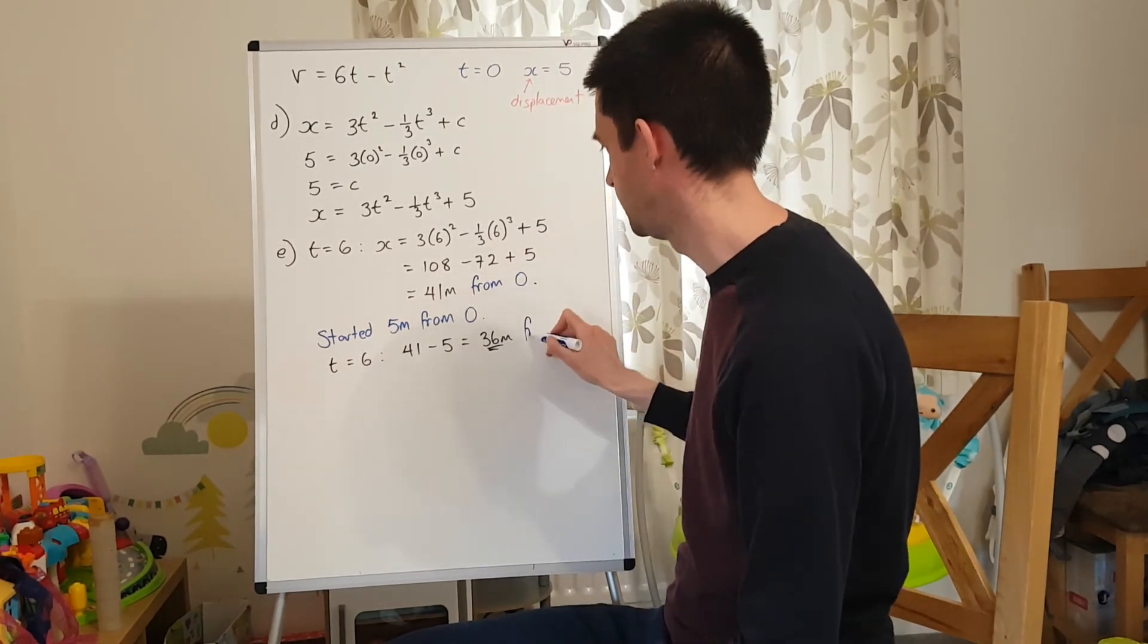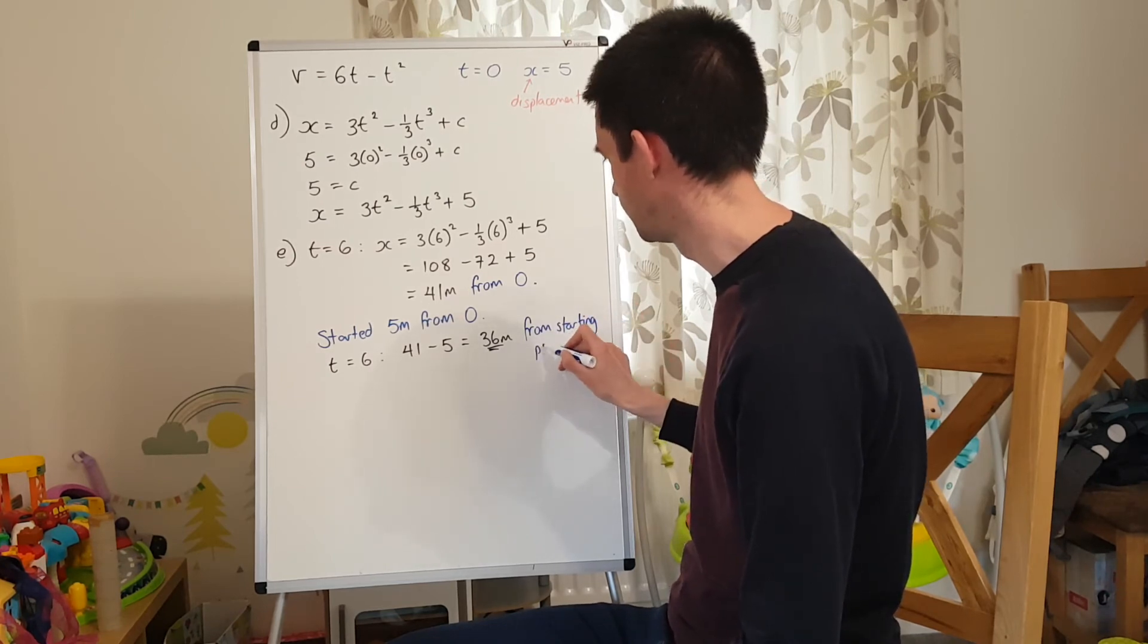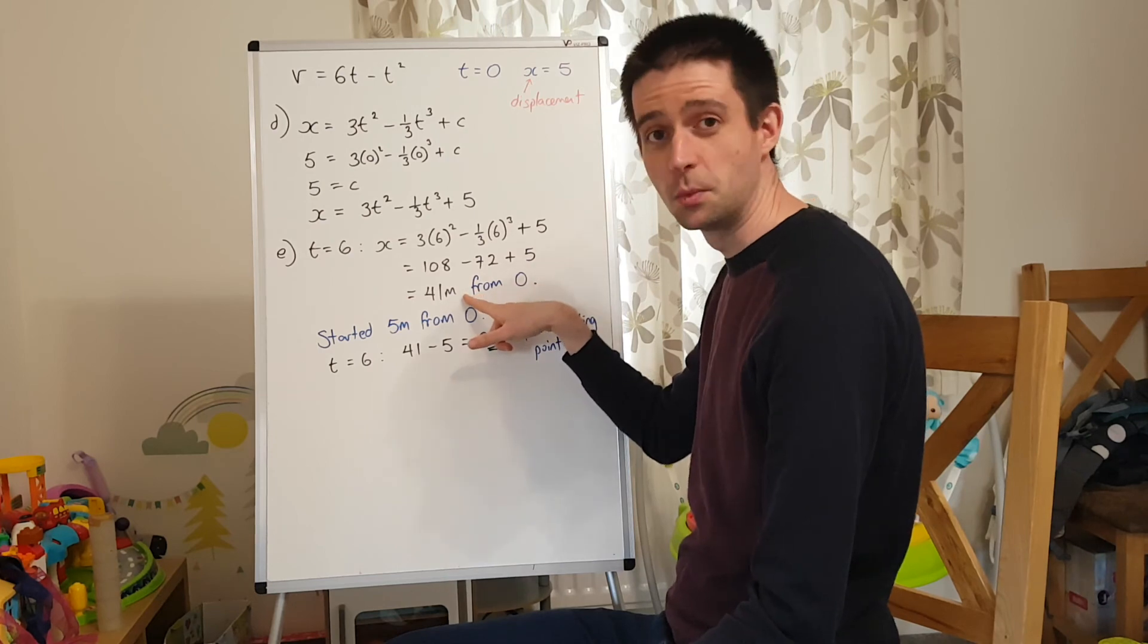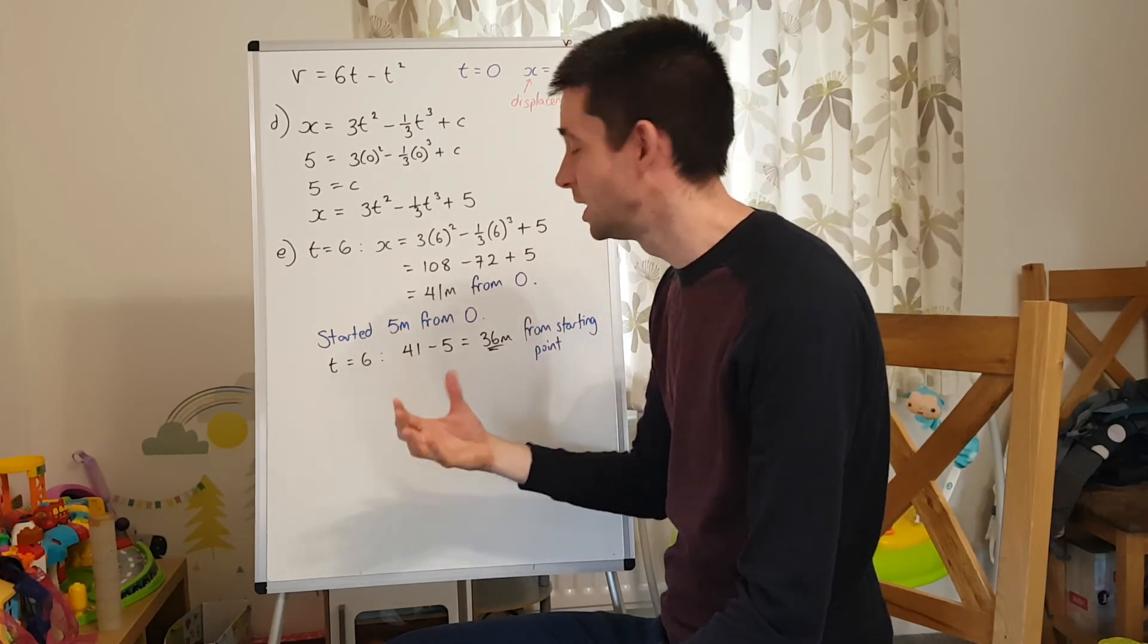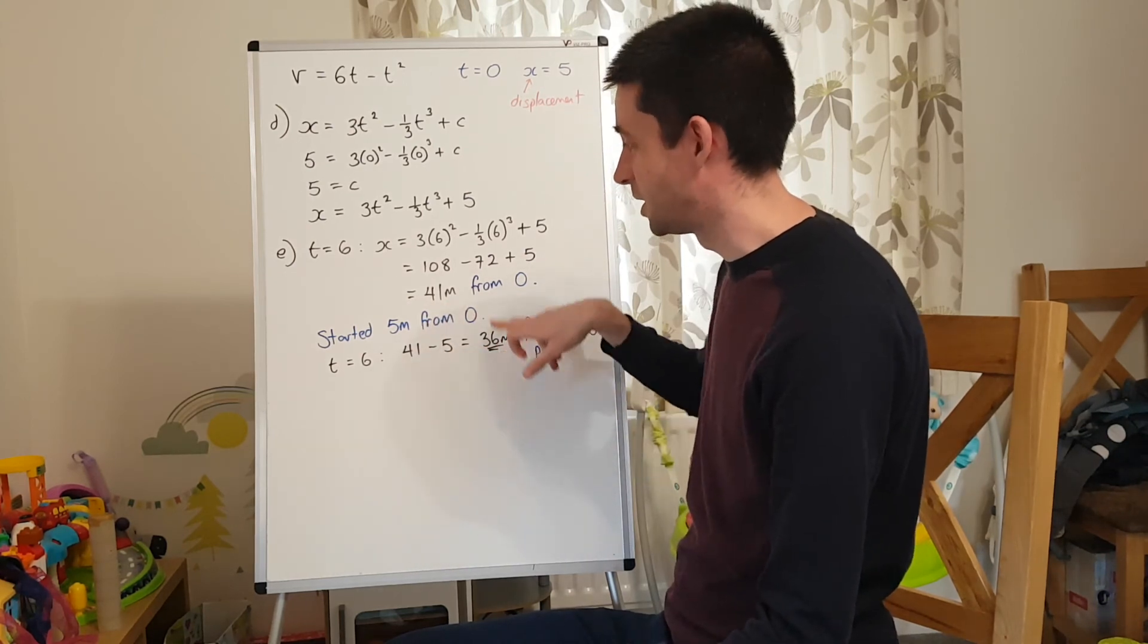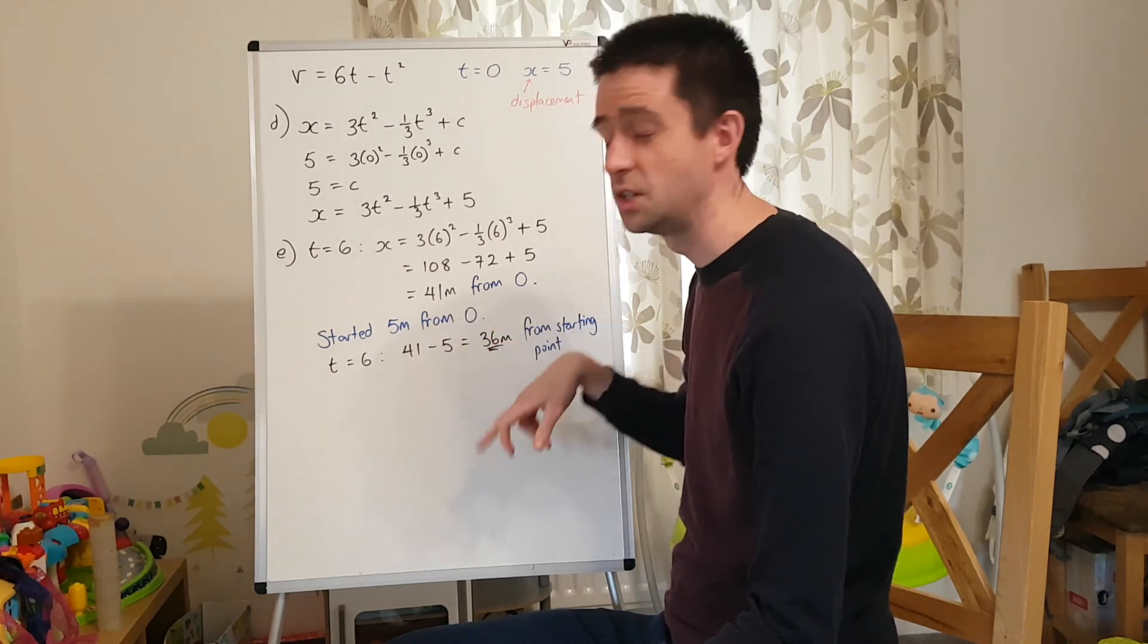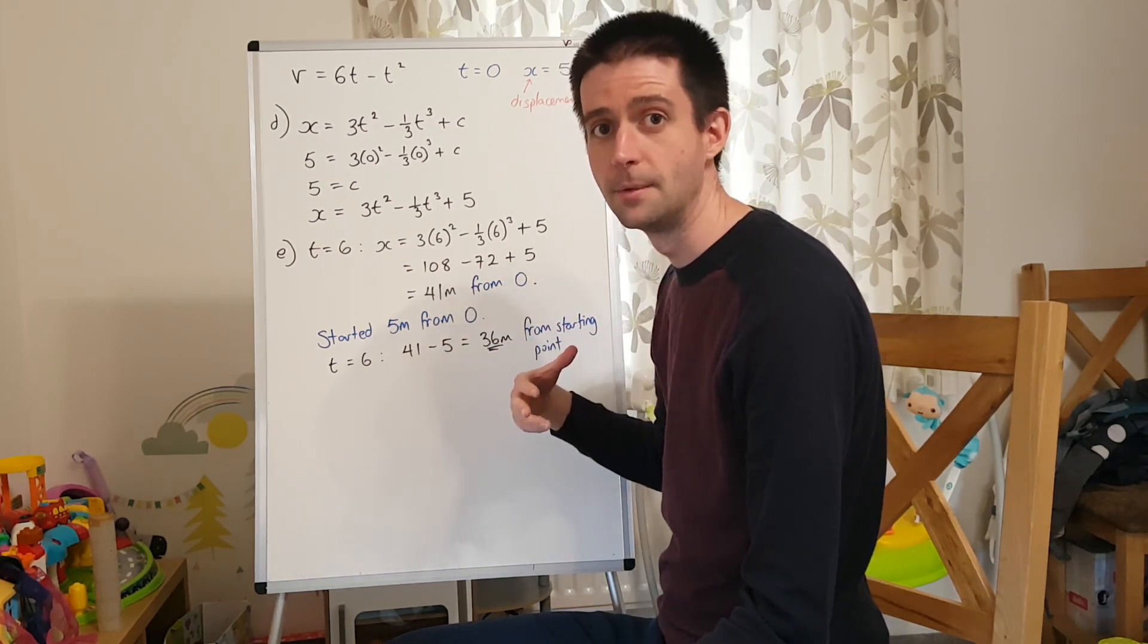36 metres from its starting position, and it's very important that you understand the difference there. This equation, x here, is telling you its position relative to O, which is 41 metres away from O. That isn't necessarily how far it's travelled, or how far away it is from its starting point, because it started 5 metres from O. So it's now 36 metres from its starting point, which is 41 metres from O.